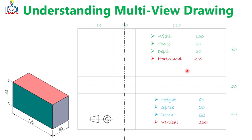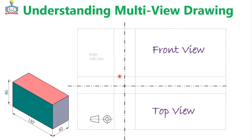The front view will have 150 width and 80 height. For the top view, the height will be just the depth of the object — that means 60 millimeters. And for the right side view, the height is the same as the front view, and its width will be just the depth of the object, also 60 millimeters. So finally we'll have a place for a front, a top, and a right side view. Since it is a prism, it will have just a rectangular surface on all three views.